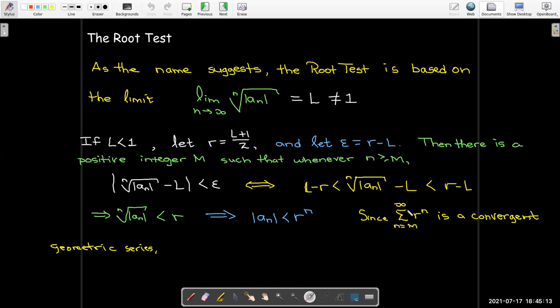Which means that if I look at the series where the terms are r to the power of n, that's going to be convergent. And then I have this inequality which means I can use the comparison test to show that this tail of the series is convergent, and that's all I need to show.